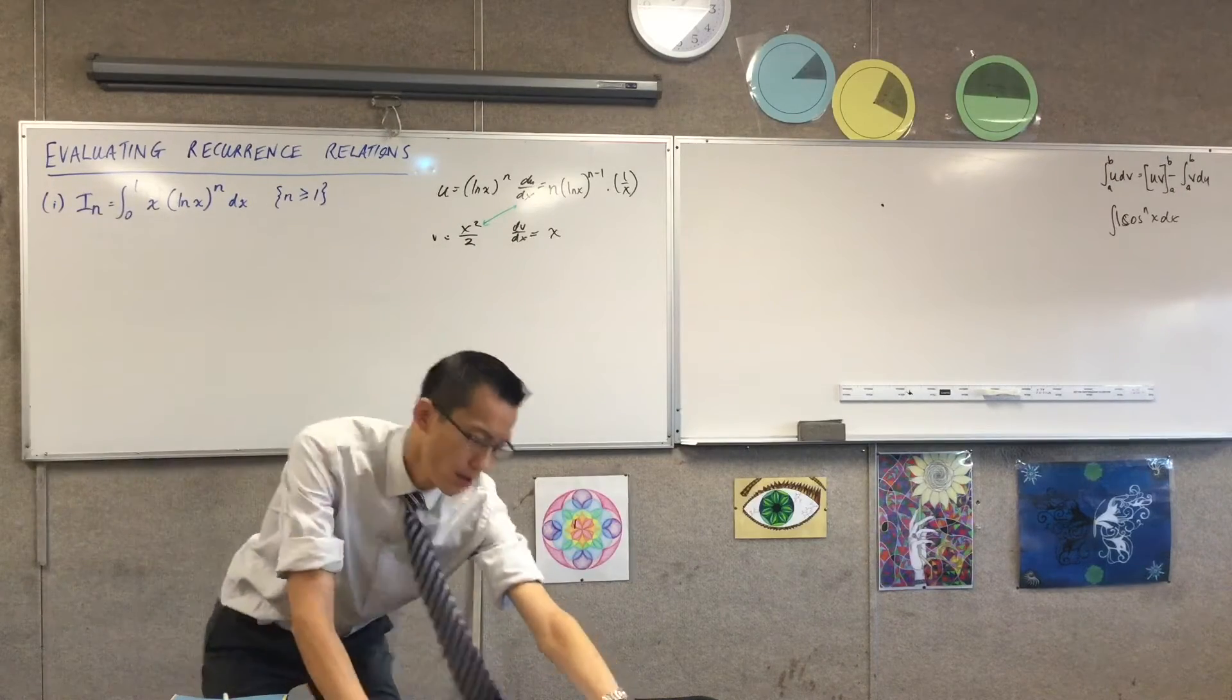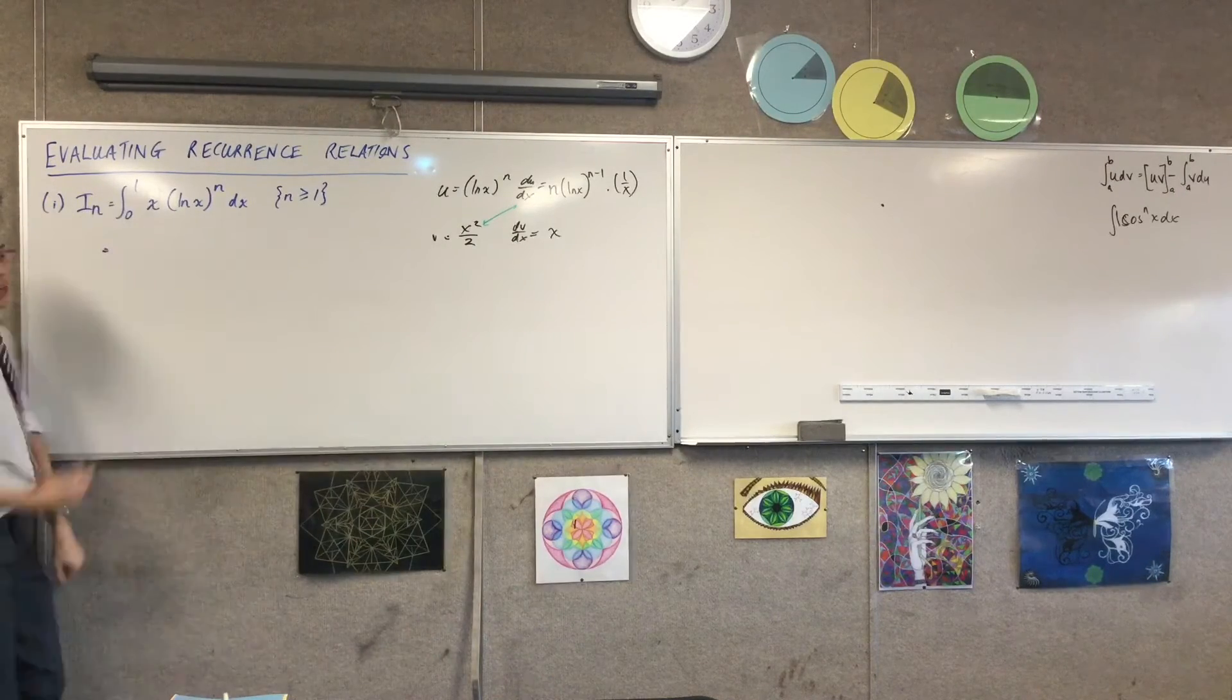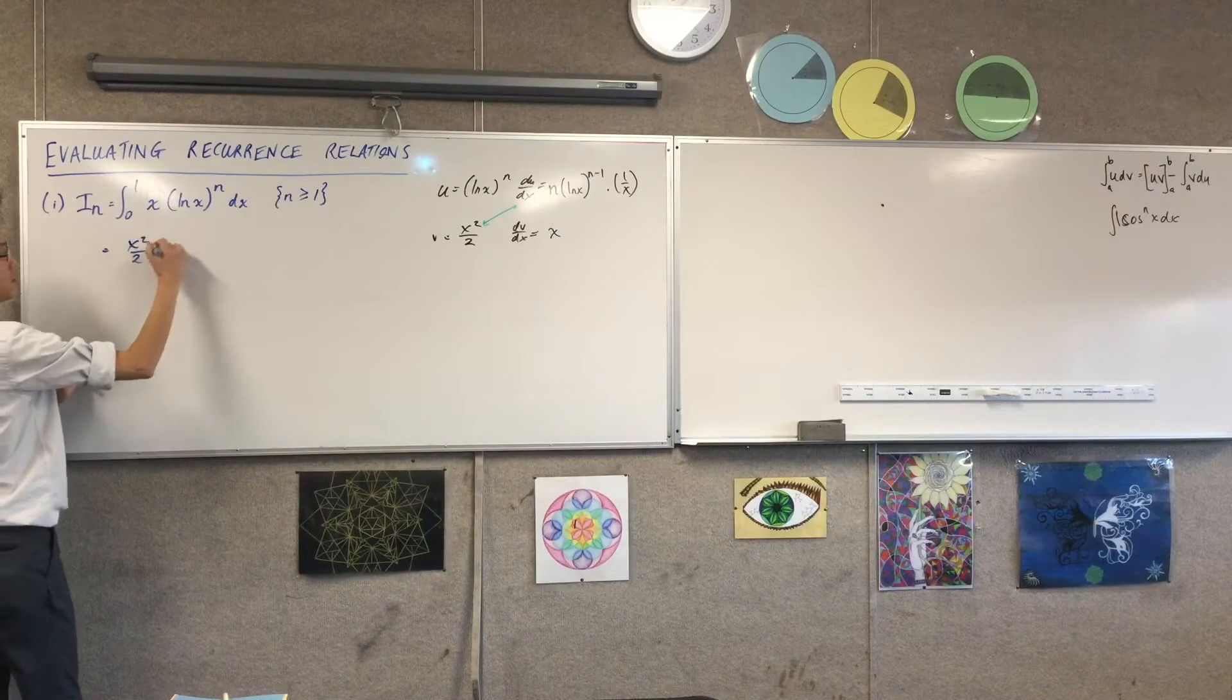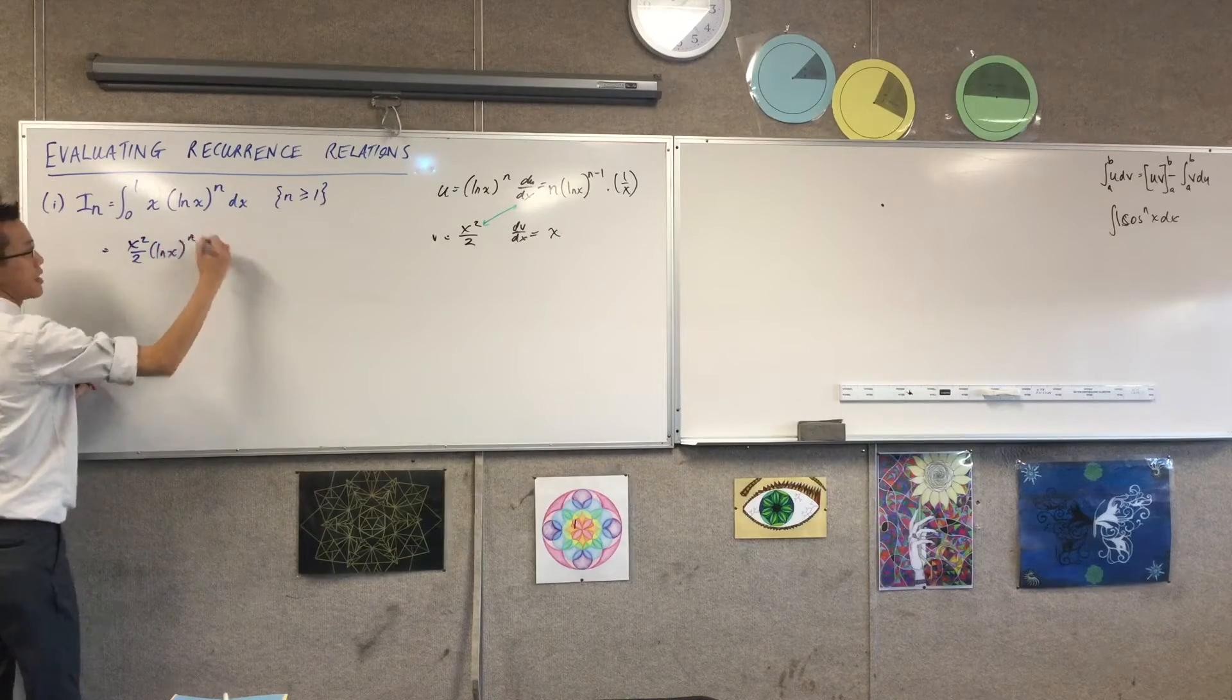I'll go back to blue actually. So I would usually just write uv, which looks like this: x squared over 2 times log x to the n.